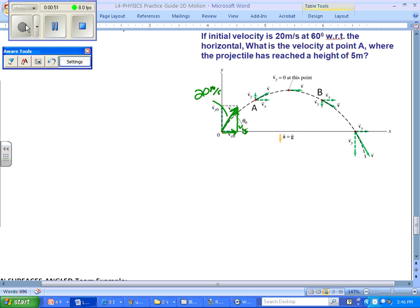What we're trying to figure out is that if this angle is 60 degrees and this change in vertical position is 5 meters, we're trying to find out the velocity at point A, we're calling this point A right there. So how fast is it going when it reaches point A, and in what direction, because velocity has both magnitude and direction.